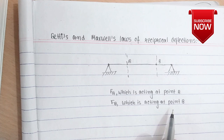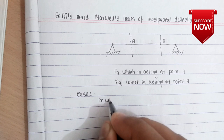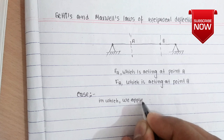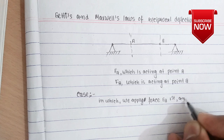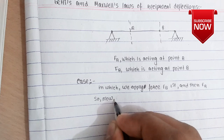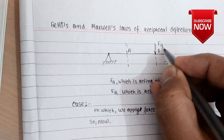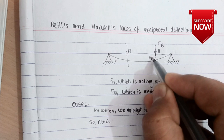These are the two forces which will occur. To derive this reciprocal deflection, first we have to consider two cases. In case one, we apply force F_B first and then F_A. Let F_B be the force acting at point B, and due to force F_B there is some deflection in the cantilever beam — delta B_B.